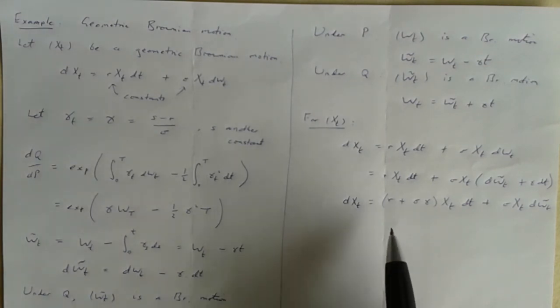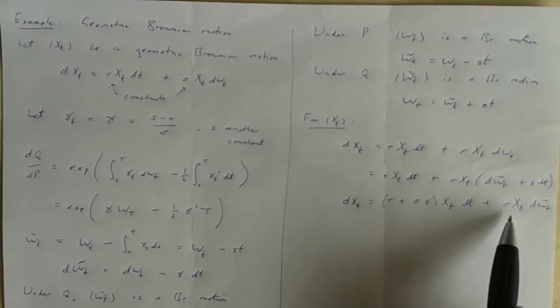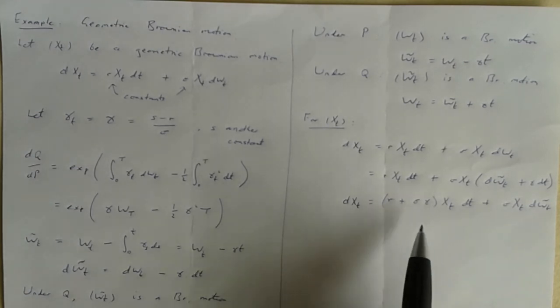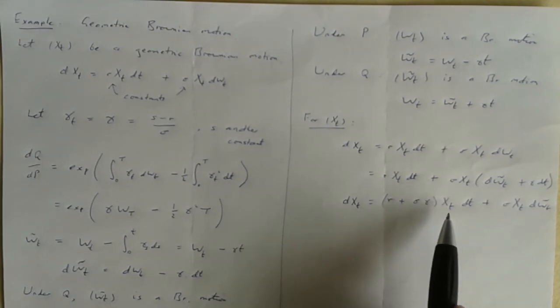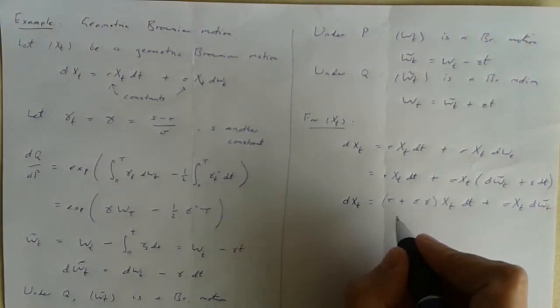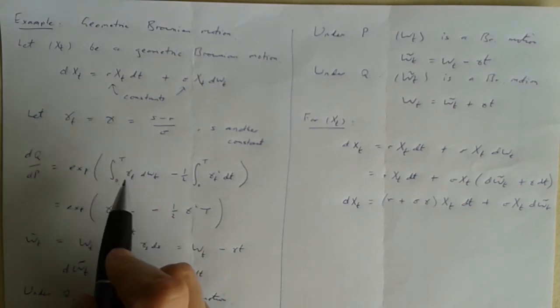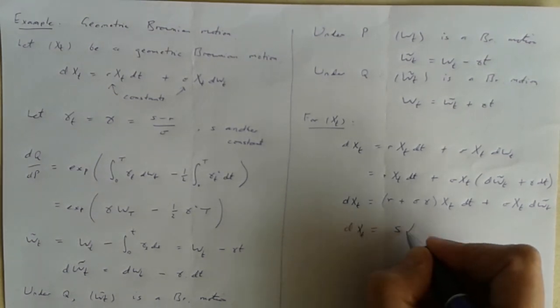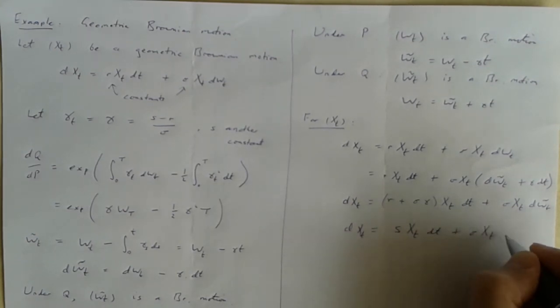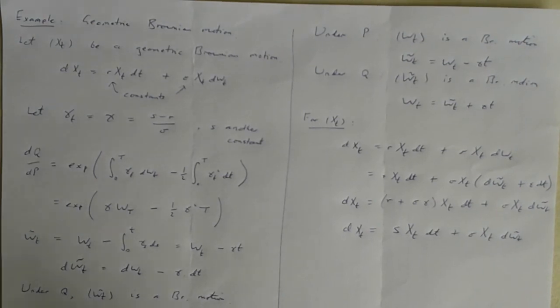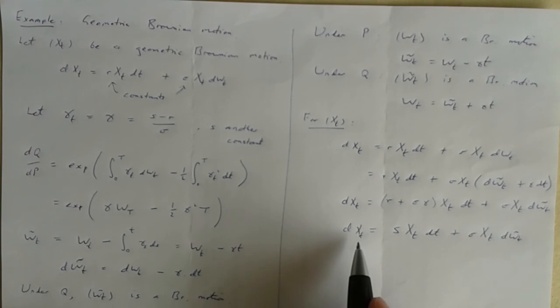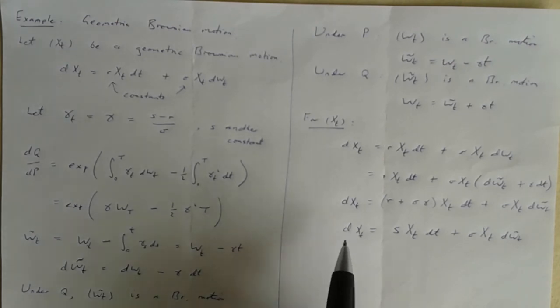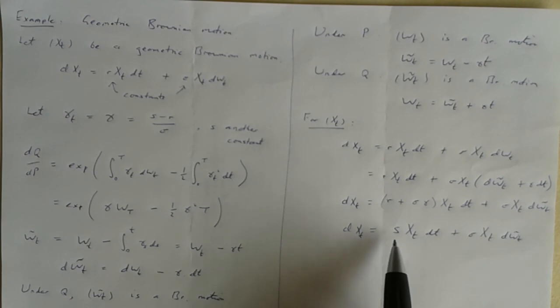So that's going to be r plus sigma gamma Xt dt plus this. So under the probability measure Q, we see that X is now still an Ito diffusion. It still has the same speed as before, still sigma times itself, but its drift has been changed to this. Its drift is still a constant multiple of itself, but it's a different constant. And in fact, because of the way we define gamma to be s minus r over sigma, that means that r plus sigma gamma equals s. So this finally is the equation now, this is the stochastic differential equation that x now satisfies, and you see it's the same one we had before, it's still the geometric Brownian motion equation, just with a different constant here.